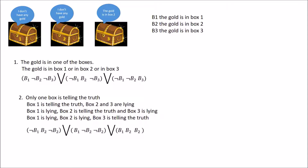The second possibility is box two telling the truth. Box one is lying — it said no gold, so therefore B1. Box two tells the truth — it said no gold, so not B2. Box three is lying — it said gold is in box two, so not B2. The third possibility: box three tells the truth. Box one lies, so B1. Box two lies, so B2. Box three said gold is in box two and it's truthful, so B2. That gives us three possibilities separated by OR.